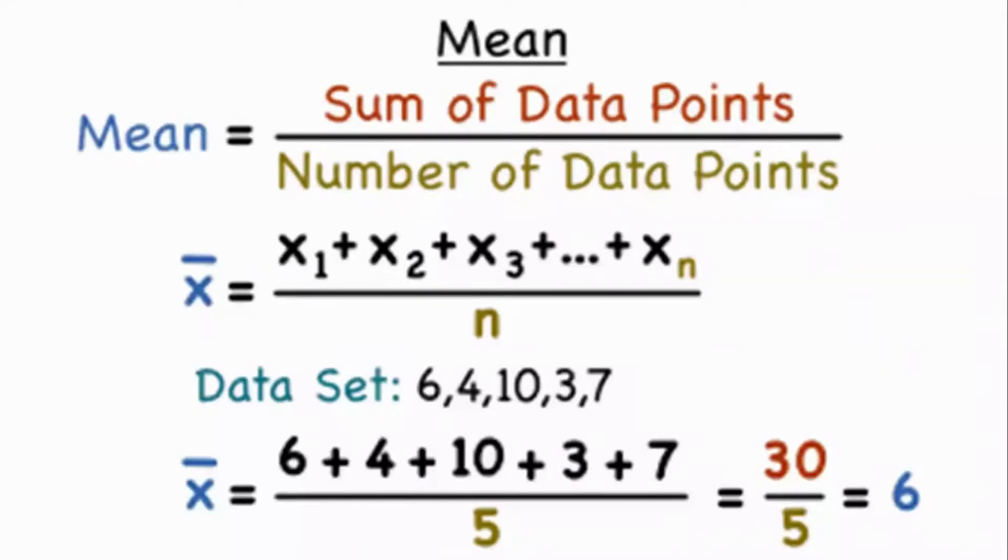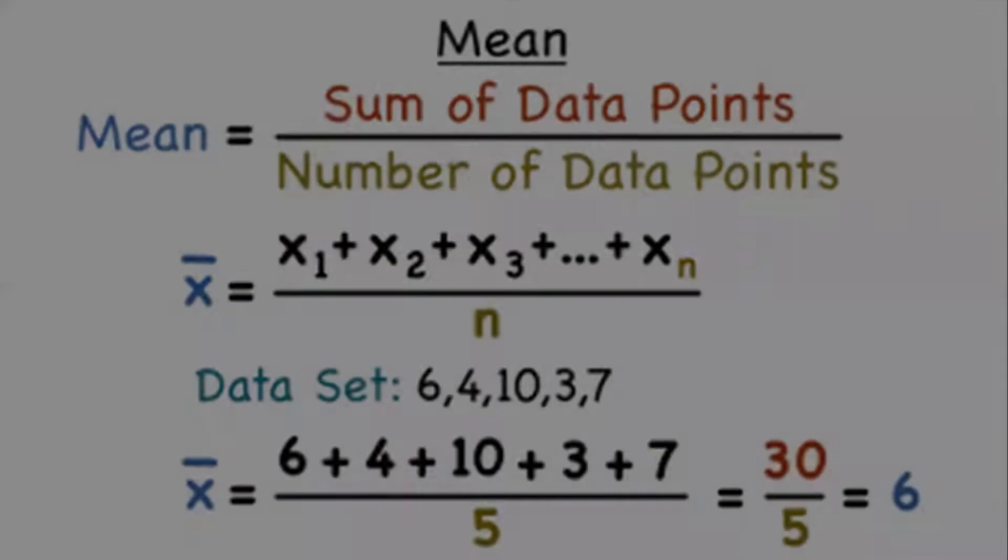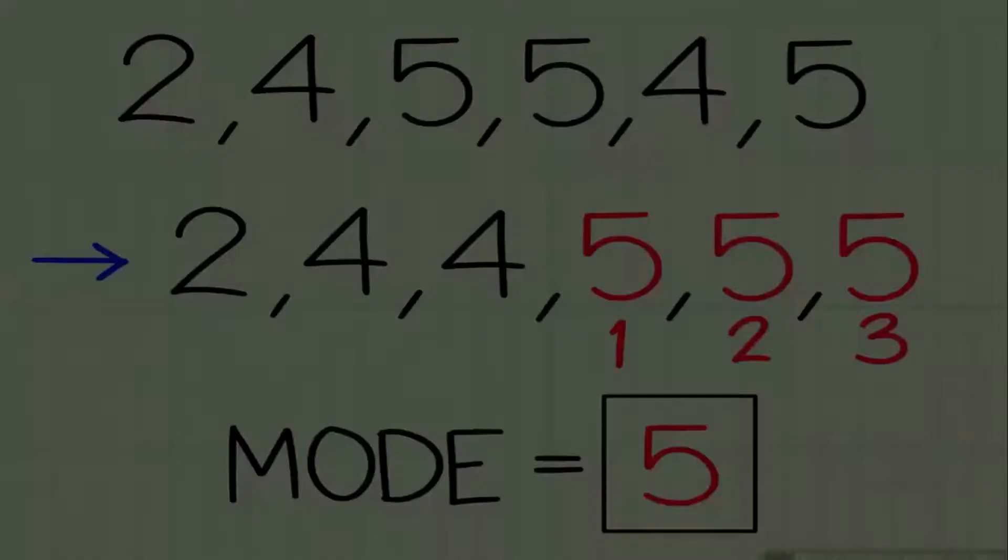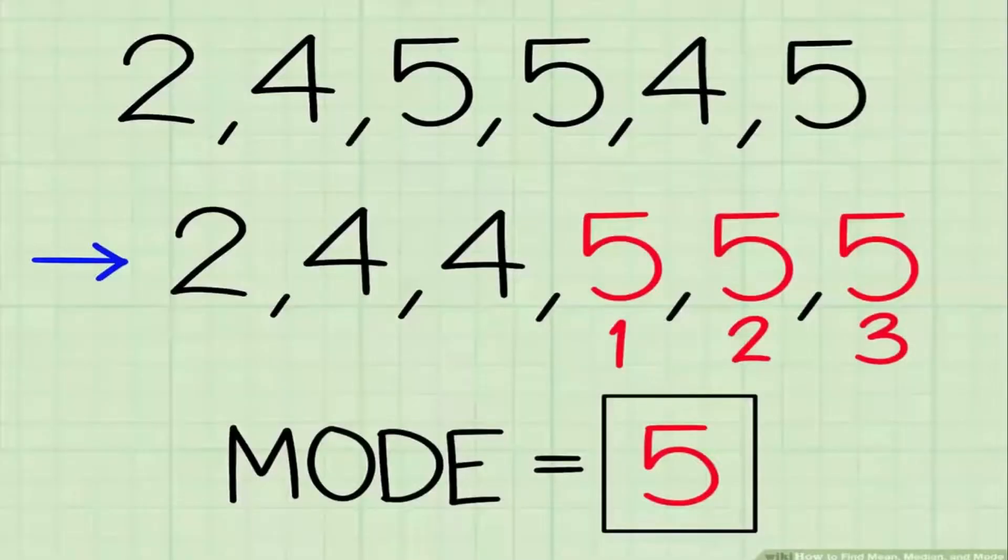The average number found by adding all data points and dividing by the number of data points is called mean. Median. The middle number found by ordering all data points and picking out the one in the middle or if there are two middle numbers, taking the mean of those two numbers. Mode. The most frequent number. That is the number that occurs the highest number of times.